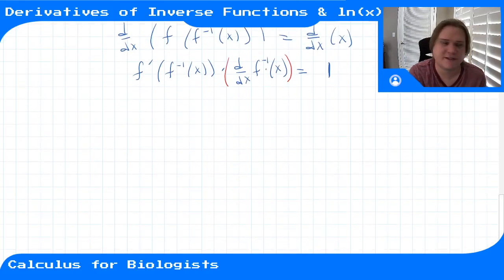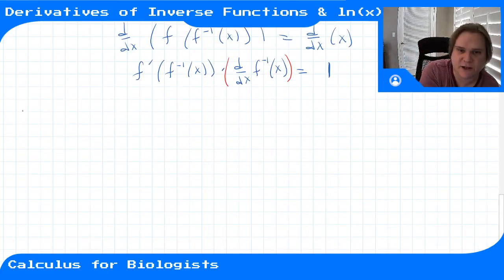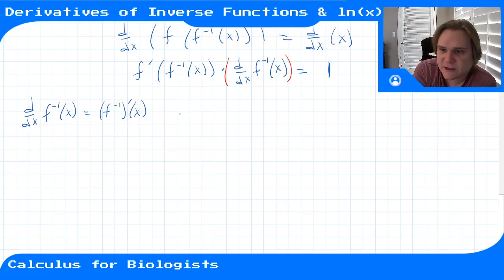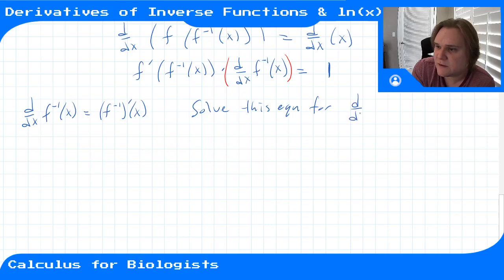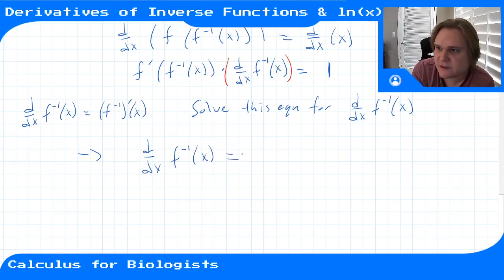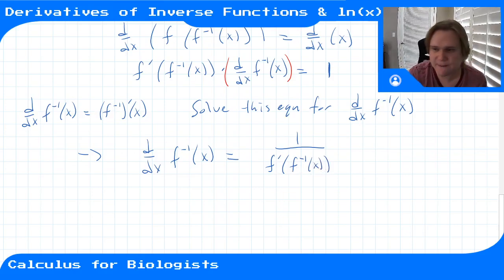Now we solve for the derivative of f inverse. We can write it as d/dx of f inverse of x, or as f inverse prime of x — same thing. Either way, we divide both sides by f prime of f inverse of x, so we get: the derivative of the inverse function equals 1 over the derivative of f evaluated at f inverse of x. This is the formula for calculating the derivative of an inverse function.